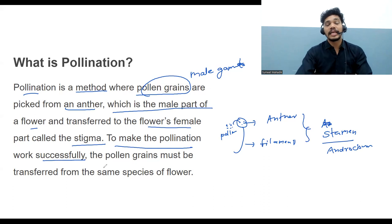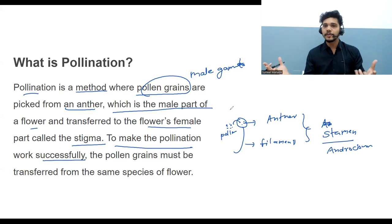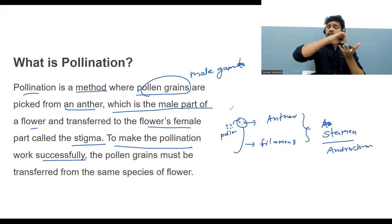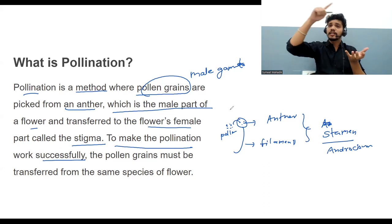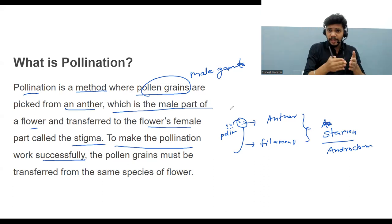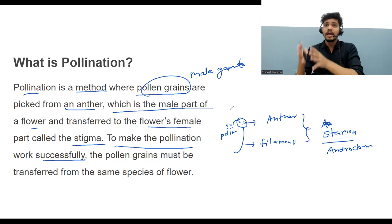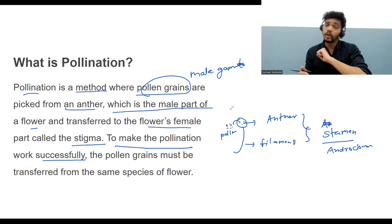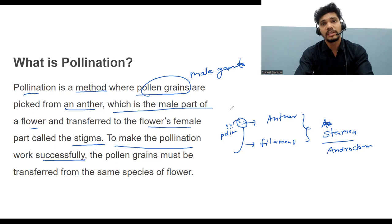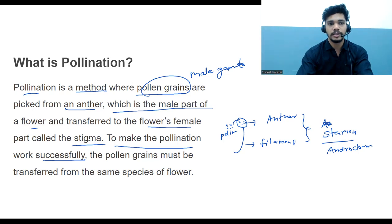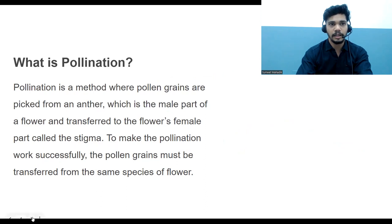The pollen grains must be transferred between the same species of flower. For example, jasmine's pollen grain should be transferred only to a jasmine plant — on the same plant that is self-pollination, or on a different plant of the same species. This is the main important point.